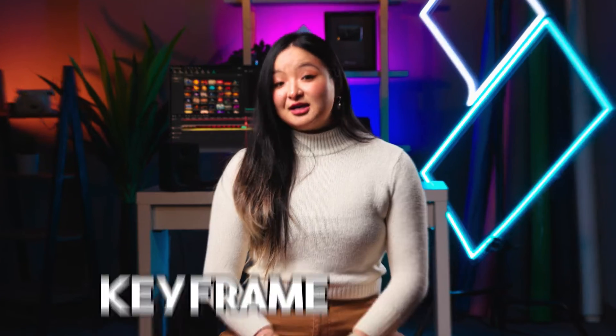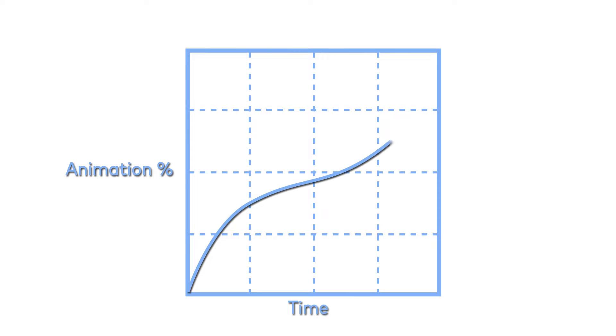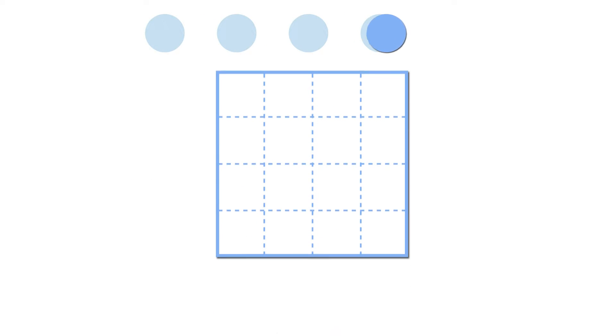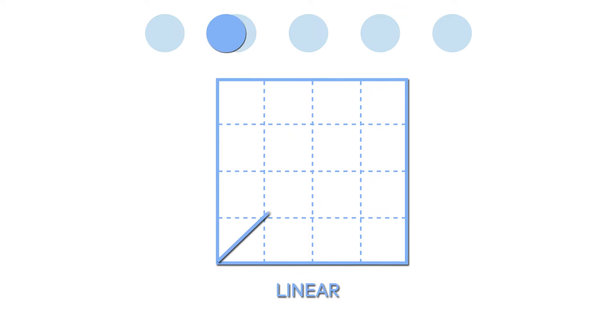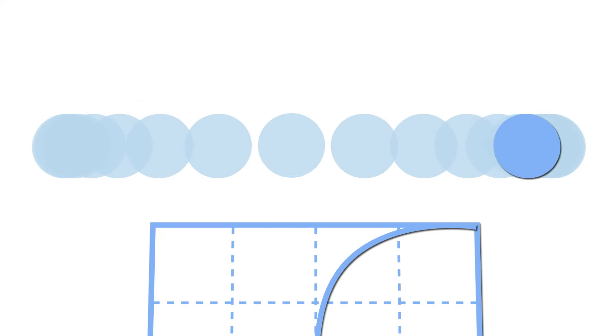Now let's talk about keyframe curves. The newly added curves in Filmora 13 is actually something called Valley Graph Curves. It visualizes the changes of certain values over time. For example, when the object moves at the same speed, the graph looks like this. When we apply the Easy Ease curve to the animation, it looks like this instead. In general, the steeper the curve is, the faster the speed is. Because of that, the animation usually looks smoother when we apply a curve to it.